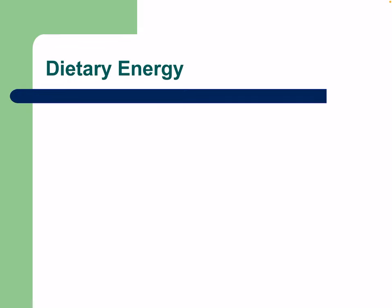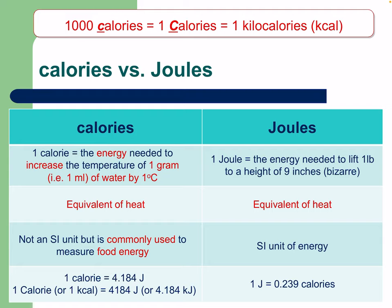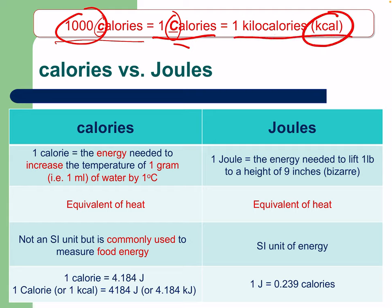Now we'll be looking at dietary energy. An important distinction: a thousand lowercase calories equals one uppercase Calorie. So one Calorie equals one kilocalorie, or kcal. This matters when you're reading nutrition labels — a lot of European labels use kilocalories or kilojoules, so just keep that in mind as an important conversion.